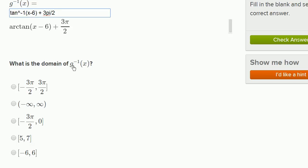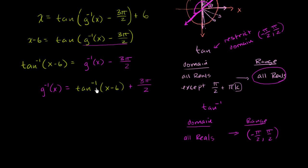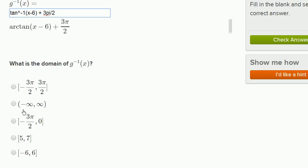Going back to the original question — what is the domain of g inverse? Looking at g inverse of x, which is arctan of x minus 6 plus 3π/2, I can put any real number in for x. So the domain of g inverse of x is negative infinity to infinity — all real numbers.